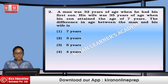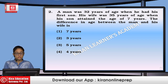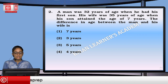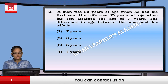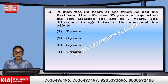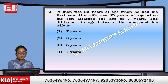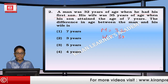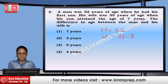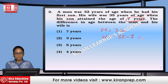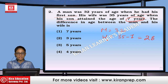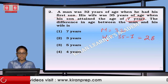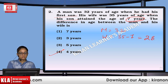A man was 32 years of age when he had his first son. His wife was 35 years of age when his son attained the age of 7 years. The difference in age between the man and the wife: when the son was born, the man was 32, so wife was 35 minus 7, which is 28. The difference is 4 years — that is option number 4.